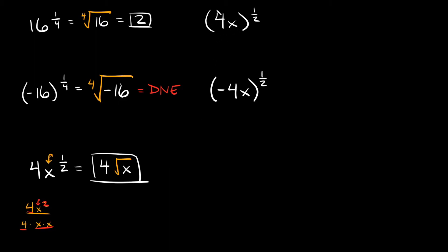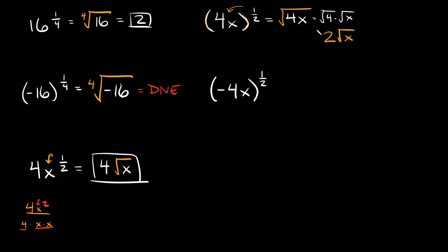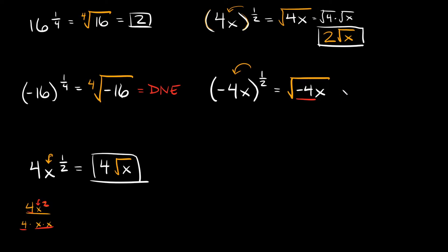When the 4 and x are in parentheses, like (4x)^(1/2), the exponent gets applied to everything inside, so this equals the square root of 4x. We can split that as the square root of 4 times the square root of x. The square root of 4 is 2, so the simplified answer is 2 times the square root of x. For (-4x)^(1/2), since the negative is inside parentheses, this equals the square root of negative 4x — which does not exist.